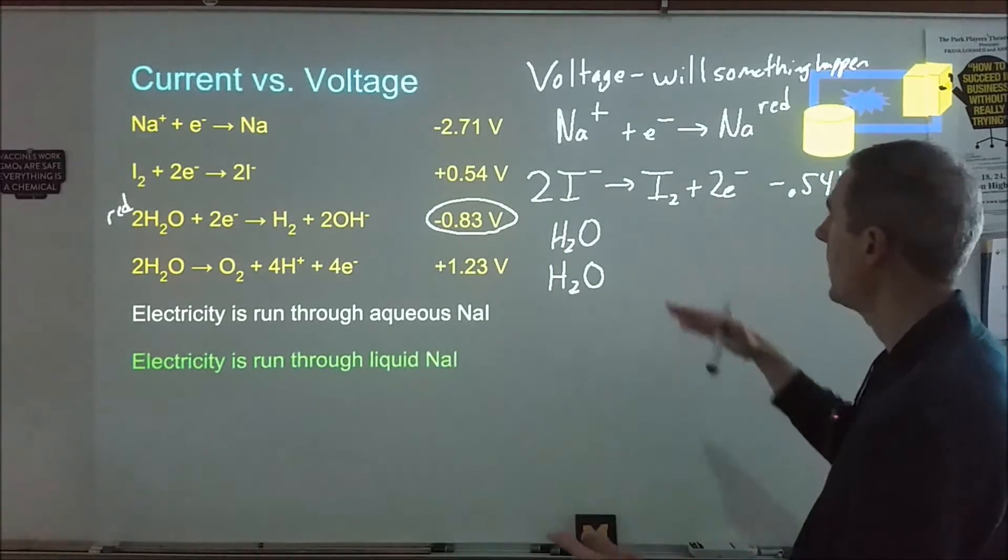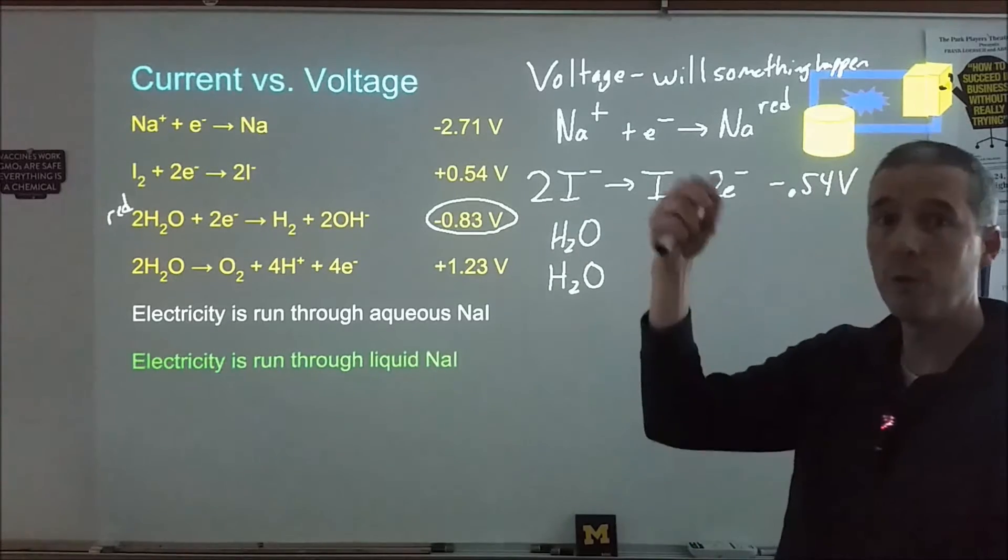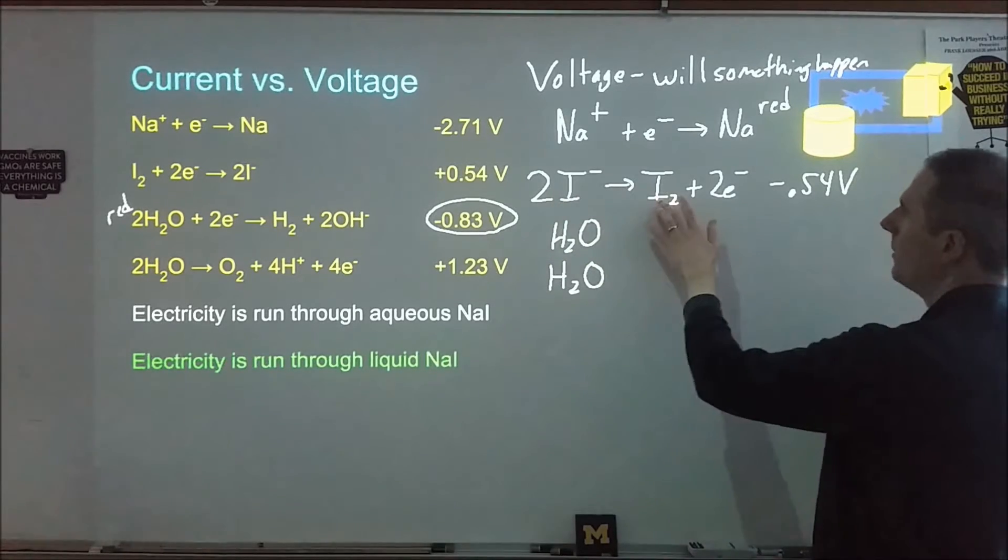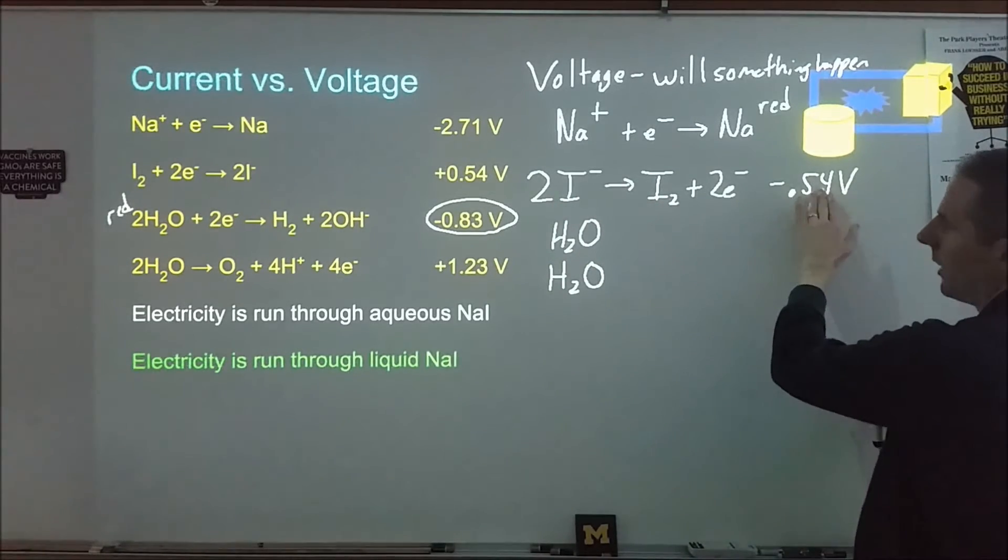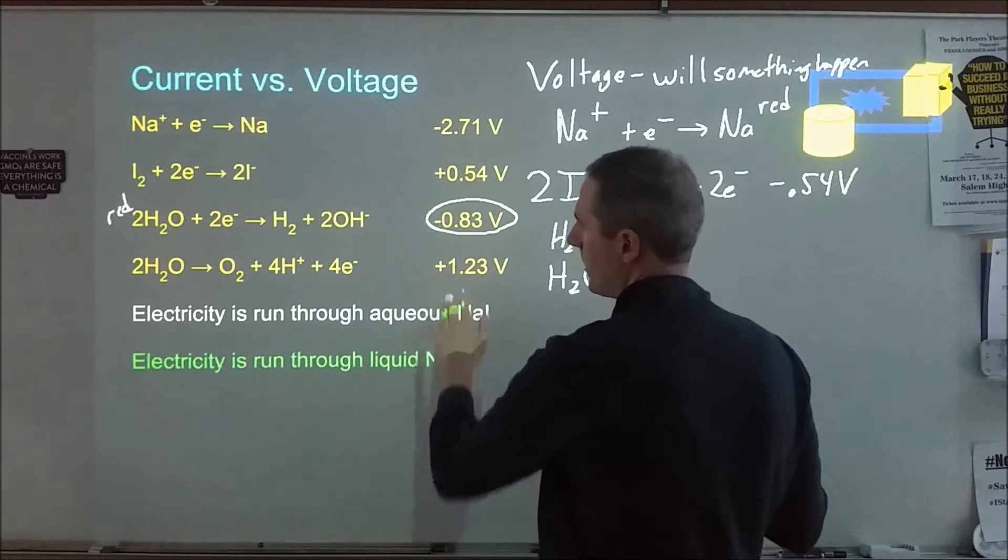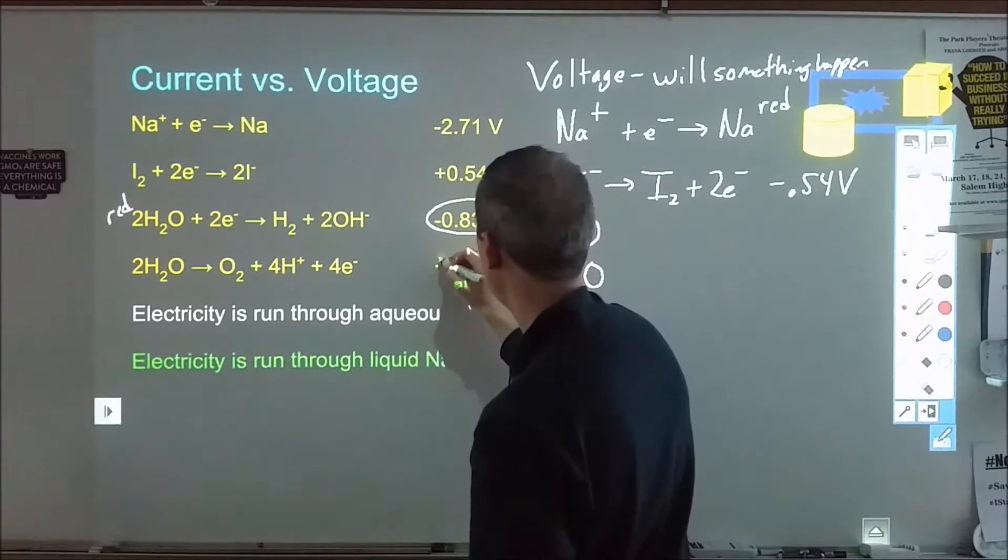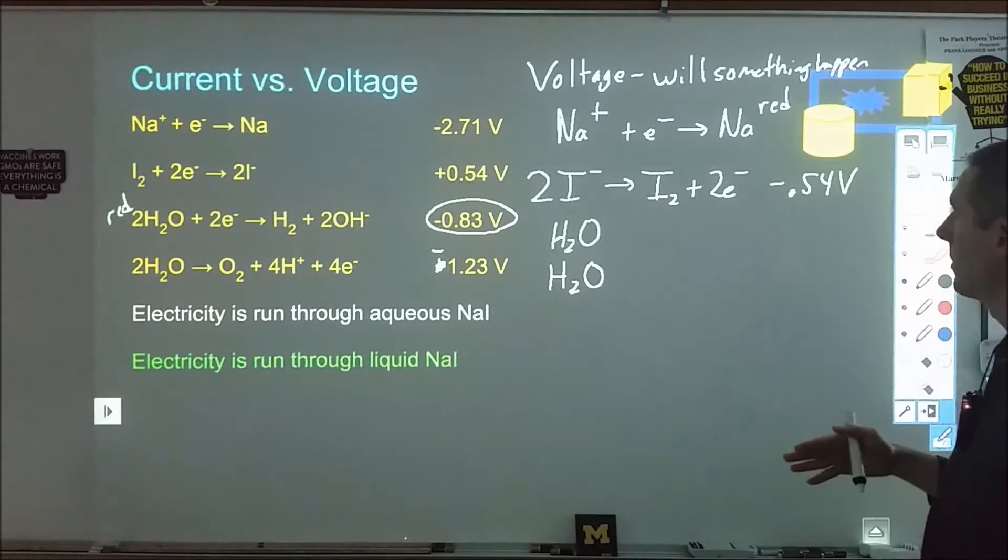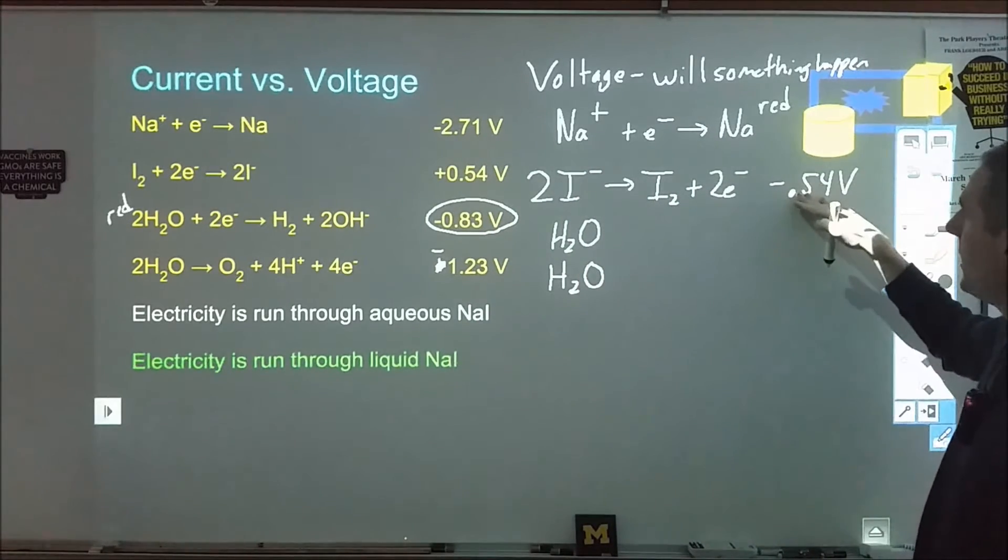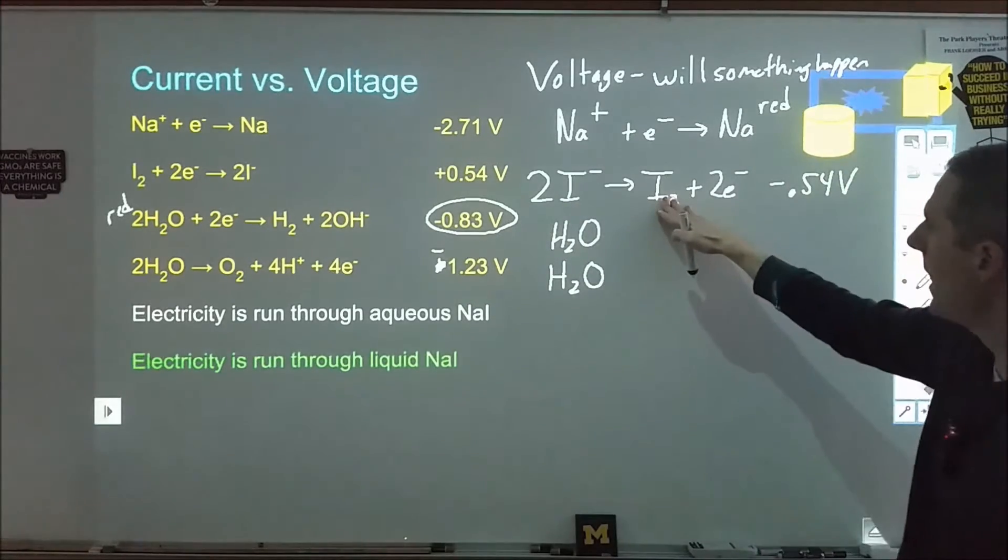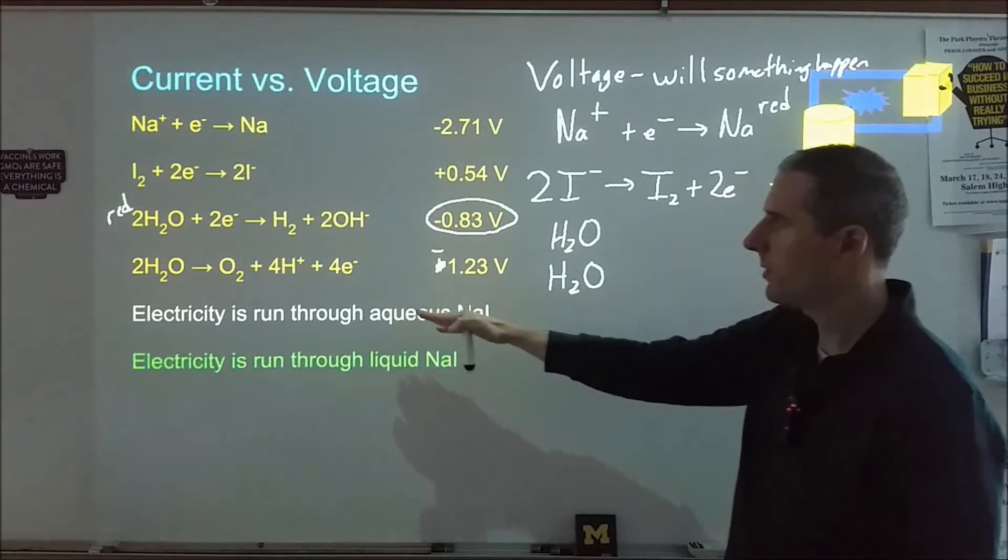If we look at the other case, the oxidation, which one's easier to remove the electrons from? Because we need a circuit to flow electricity through the whole thing. The iodide losing electrons has a voltage of negative 0.54 volts. The water losing electrons has a voltage—this is supposed to be a negative here—of negative 1.23 volts. So this one is easier to have happen than this one is. What will happen is we'll form iodine rather than forming oxygen.